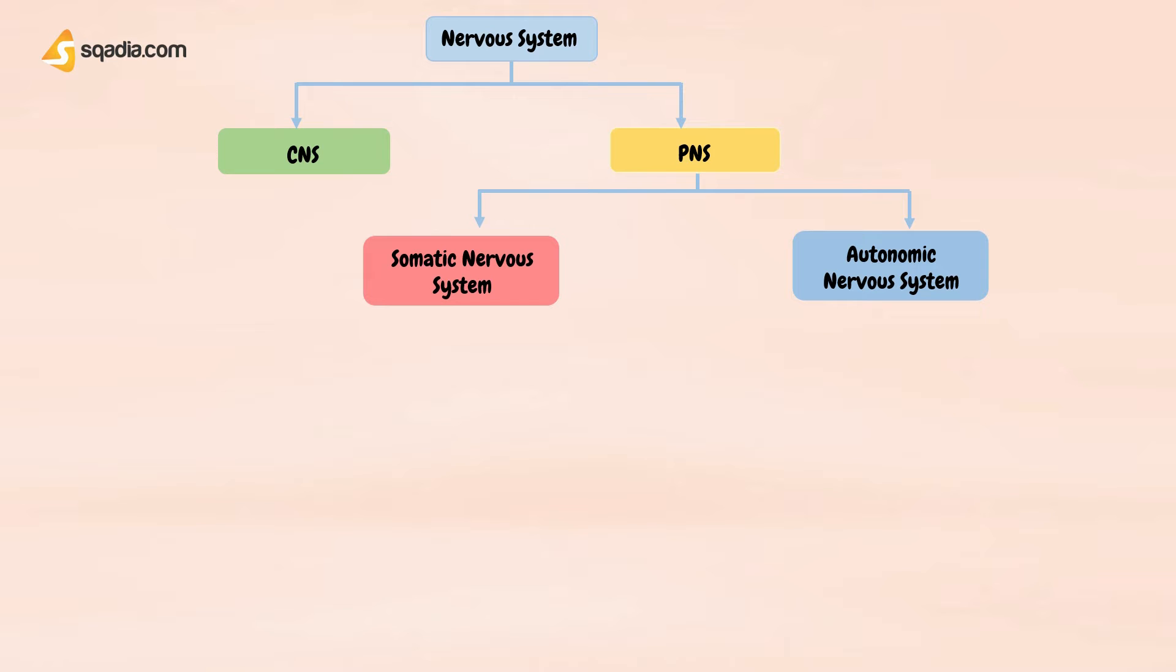The autonomic nervous system oversees unconscious activities. The somatic nervous system consists of cranial and spinal nerve fibers, connecting the central nervous system to the skin and skeletal muscles.